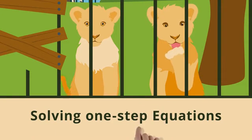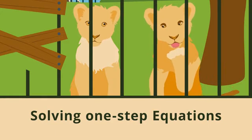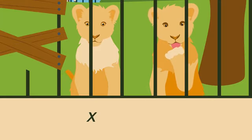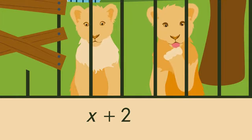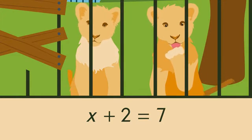Well, to solve this, we can use a one-step equation with a variable. Let x represent the number of missing baby lions. To this, we can add the two that did not escape. This equals seven, which is the total number of baby lions in the zoo.